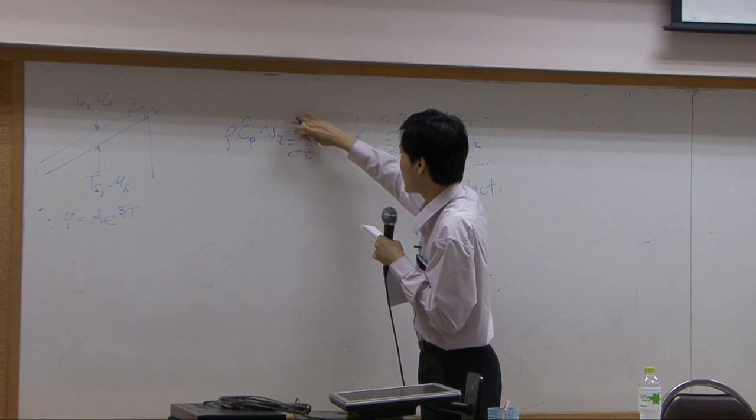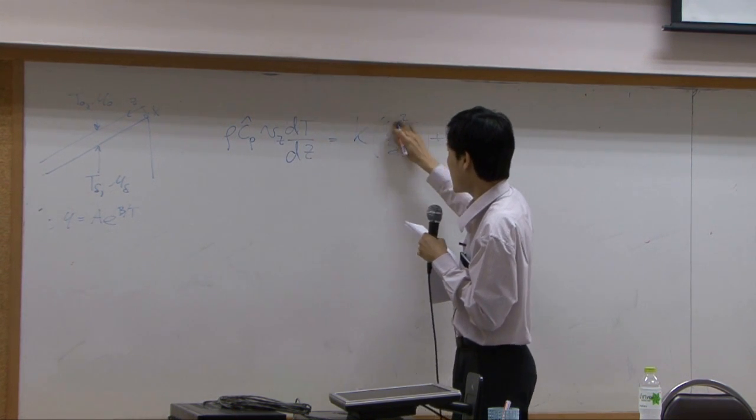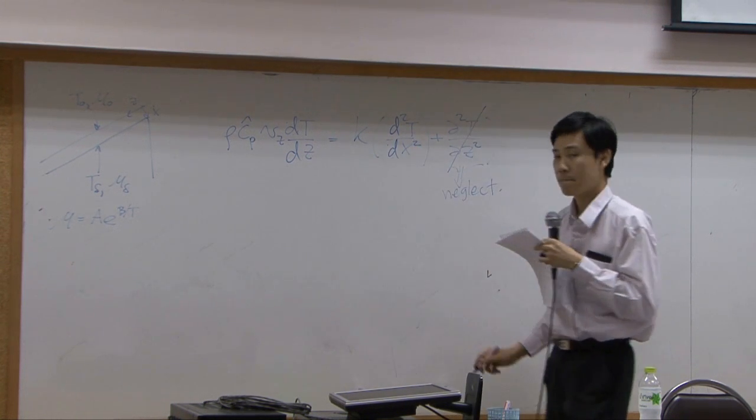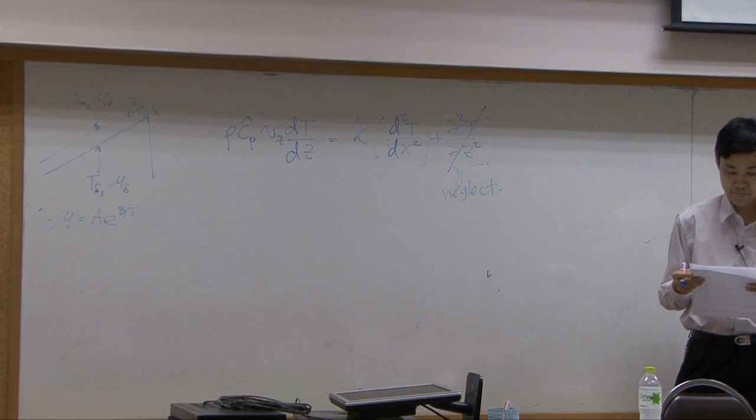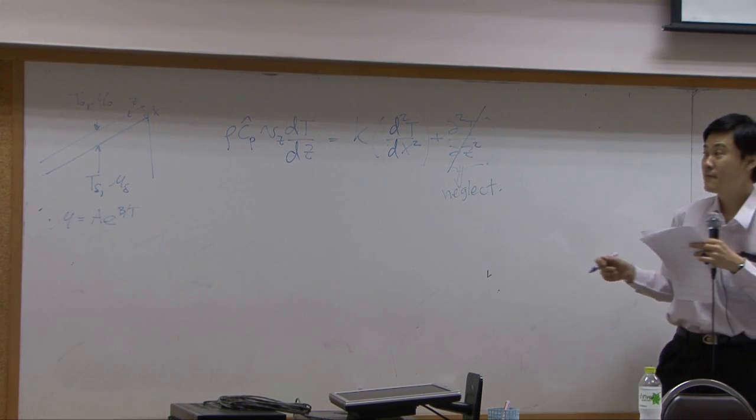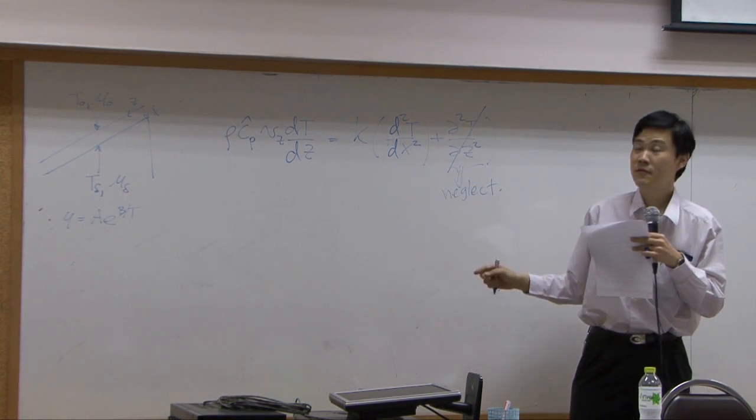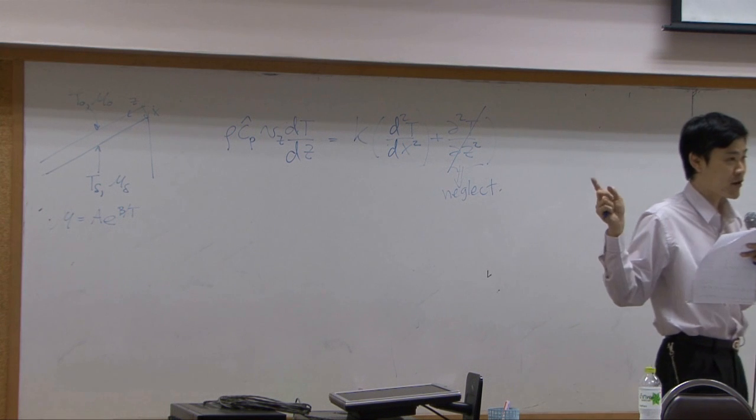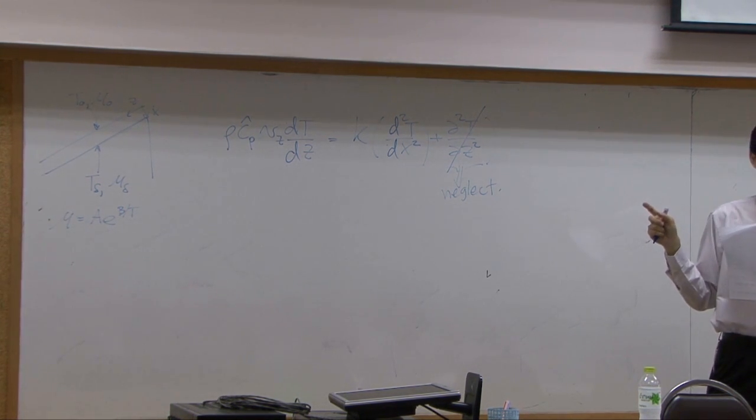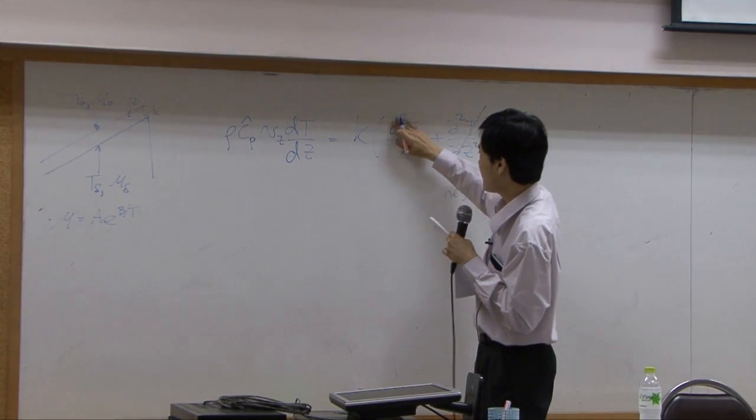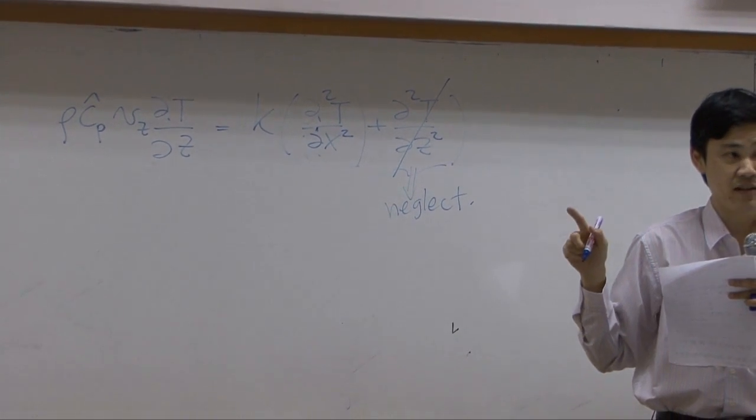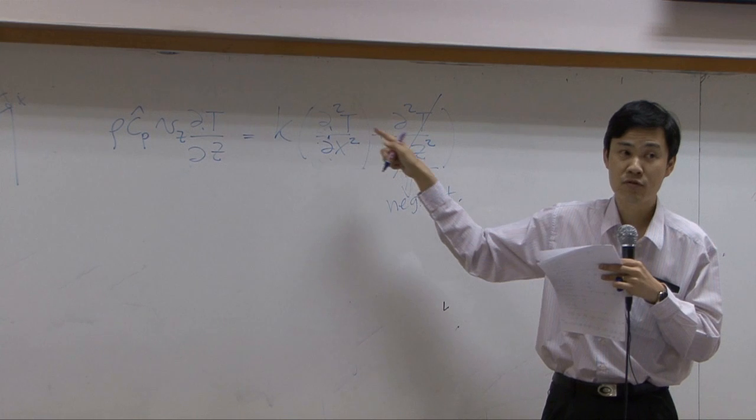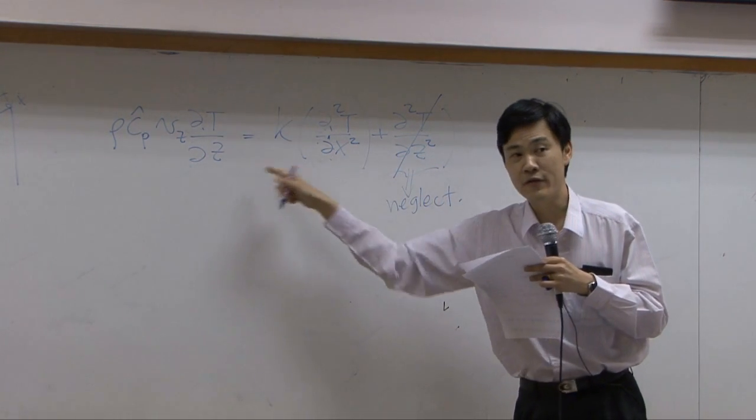Now if I change partial differential equation into total differential equation, can I do that? I can do that, right? Change the partial differential to total differential. Now you have two terms. Can you solve it? Oh no, I cannot write it this way. Because right now, temperature is still function of both X and Z. You cannot change from partial differential to total differential. So can you solve partial differential equation like this?